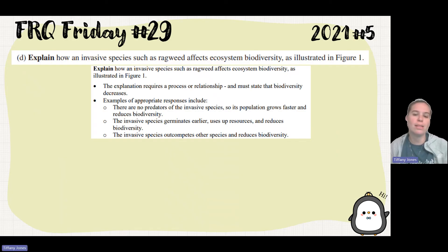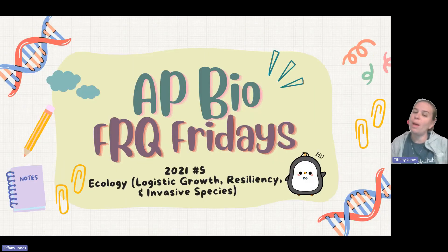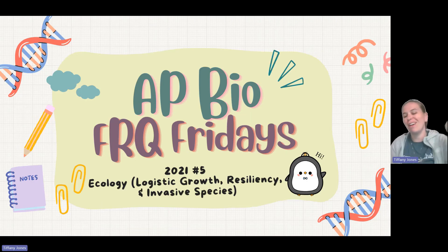You could have said any number of options like no predators, but the big thing you had to say was that we were decreasing biodiversity. It would germinate earlier, use up resources, and decrease biodiversity. Invasive species outcompete the other species and decrease biodiversity. The student said invasive species reduce biodiversity by outcompeting many different types of native species for resources. This causes the invasive species to take over and the different types of native species to decline, leaving a lot more of one type of organism in the ecosystem than before. Hope that was helpful. Remember, FRQ Friday is just a test. Bye y'all.